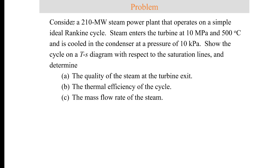In this example problem, we have a steam power plant that produces 210 megawatts of power and operates on a simple ideal Rankine cycle. Steam enters the turbine at 10 megapascals and 500 degrees Celsius and is cooled in the condenser at a pressure of 10 kilopascals. We need to show the cycle on the TS diagram, determine the quality of the steam at the turbine exit, the thermal efficiency of the cycle, and the mass flow rate of steam.